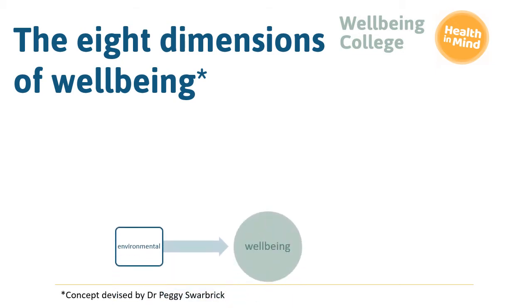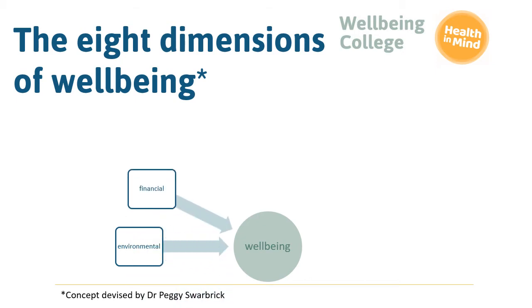Firstly, whether or not we occupy pleasant, safe and stimulating environments affects our wellbeing. Being homeless or not feeling safe at home, for example, may lead to poor mental health. Also of importance is the degree to which we feel financially secure or suffer social and economic disadvantage. Being in good physical health means we are attending to our basic needs like eating well, taking regular exercise and getting enough sleep. This can go a long way to promoting good mental health.